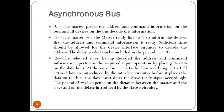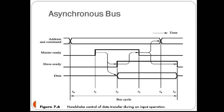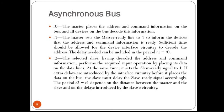The master waits for slave ready to become asserted before it removes its signals from the bus. In the case of a read operation, it also stores the data into its input buffer. An example of the timing of an input data transfer using the handshake scheme is given in the figure, which depicts the following sequence of events.